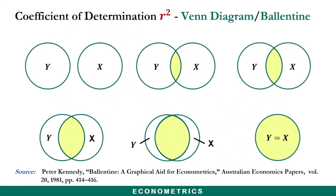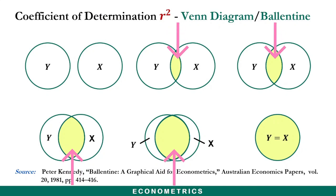In the diagram, the circle Y represents variation in the dependent variable Y, and the circle X represents the variation in the independent variable X. The overlap of the two circles, indicated by the shaded areas, describes the extent to which the variation in Y is explained by the variation in X through an OLS regression.